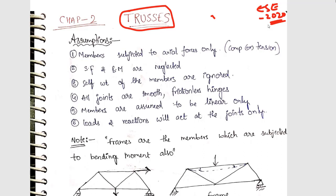This is a very simple chapter. In this chapter all you have to do is use equilibrium equations. The equilibrium equations we have are: Sigma H equals zero, Sigma V equals zero, and Sigma M equals zero. Using these three equilibrium equations, we can analyze a truss.